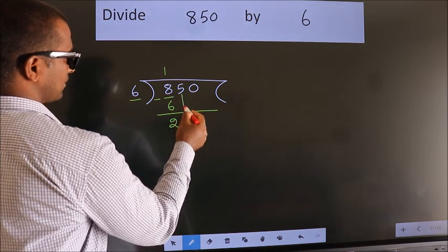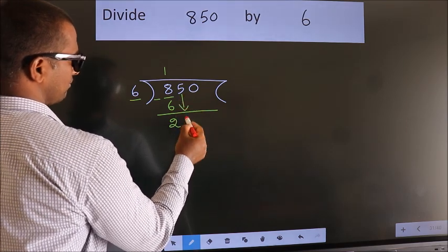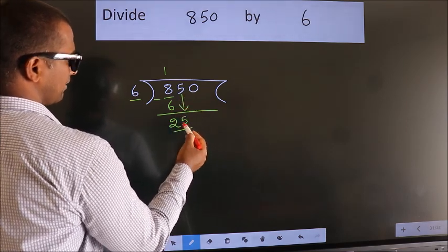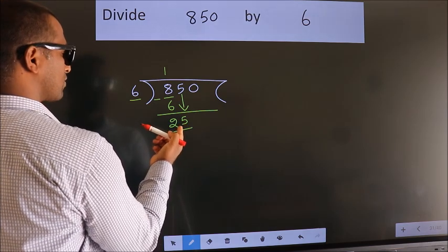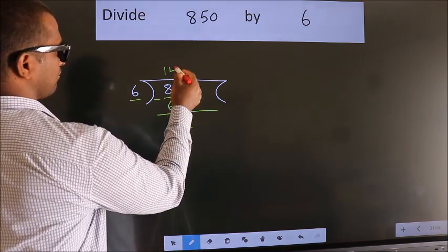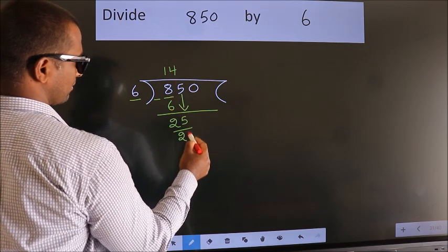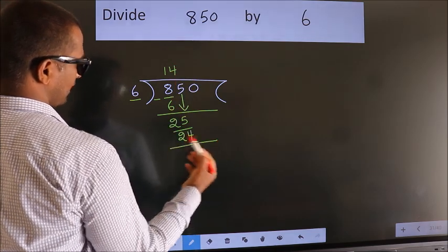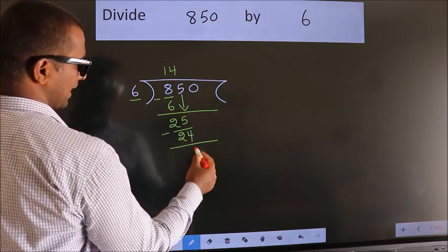After this, bring down the next number. So, 5 down. So, 25. A number close to 25 in the 6 table is 6 fours 24. Now, we subtract. We get 1.